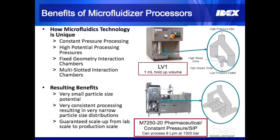Here is a brief summary of key features and benefits of our technology. The Microfluidizer processor has constant pressure processing with up to 30,000 psi. The core technology is the fixed geometry interaction chamber, and multi-slotted interaction chambers are available for scaling up. These features result in very small particle size potential, very narrow particle size distribution, and we guarantee scale-up from lab to production scale — from the LV-1 processing one milliliter at a time up to the M7250-20 producing the same results in a cGMP environment at 8 liters per minute.